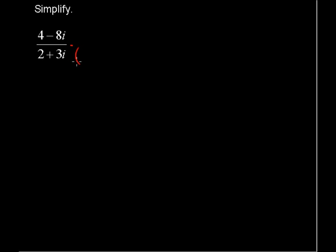Let's take a look at what is the conjugate of the denominator. The conjugate is simply just what you see with the sign changed. So here we have a plus sign, so the conjugate is going to be written 2 minus 3i.